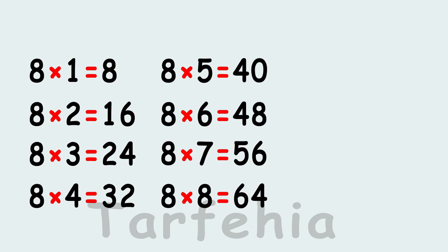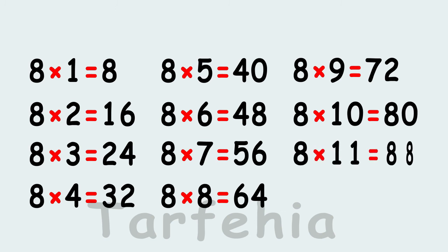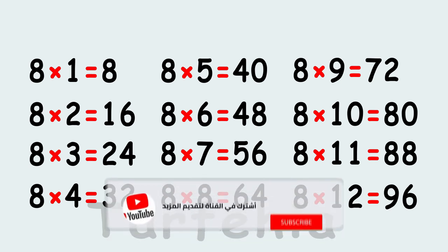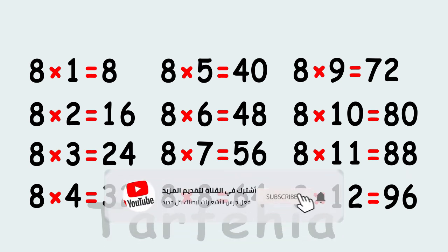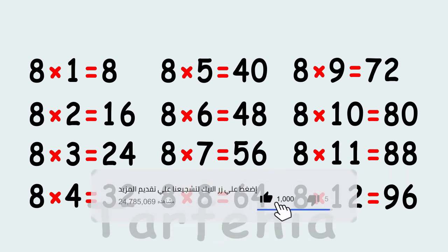8 times 9 equals 72. 8 times 10 equals 80. 8 times 11 equals 88. 8 times 12 equals 96.